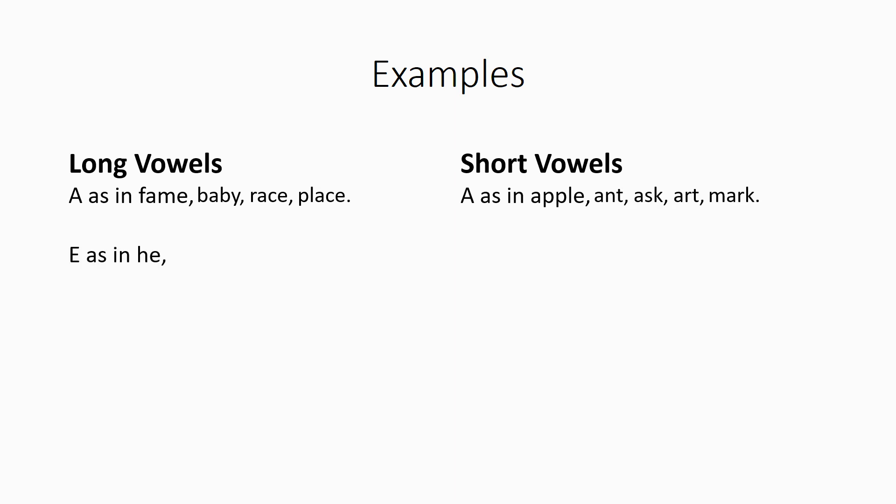If it's a long E, it's pronounced like he, she, please, complete. So, long vowels follow the pronunciation of the letter. You say A, E, I, O, U. If they're pronounced exactly like that, they're long. If otherwise, they're short.